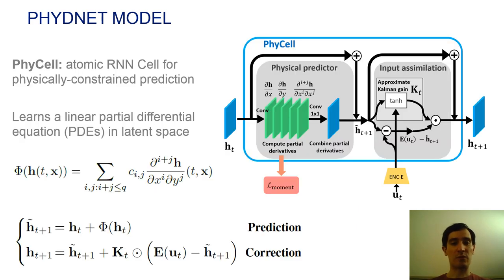The PhyCell is an atomic cell for building physically-constrained prediction. PhyCell learns PDE dynamics in latent space with differential operators approximated with convolutions. PhyCell follows a two-step scheme.